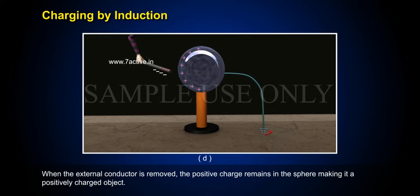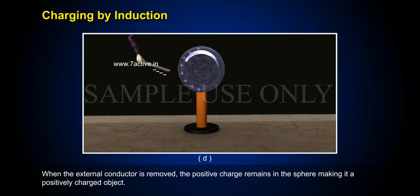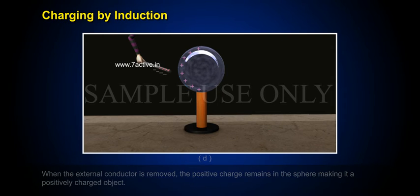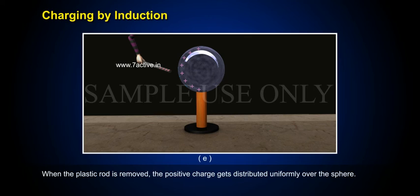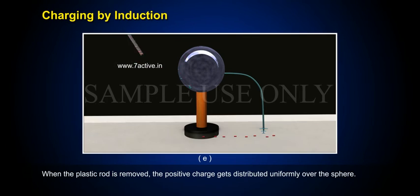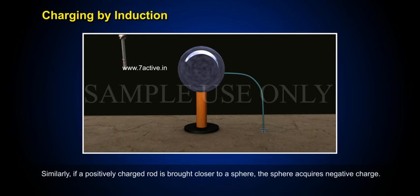When the external conductor is removed, the positive charge remains in the sphere, making it a positively charged object. When the plastic rod is removed, the positive charge gets distributed uniformly over the sphere.